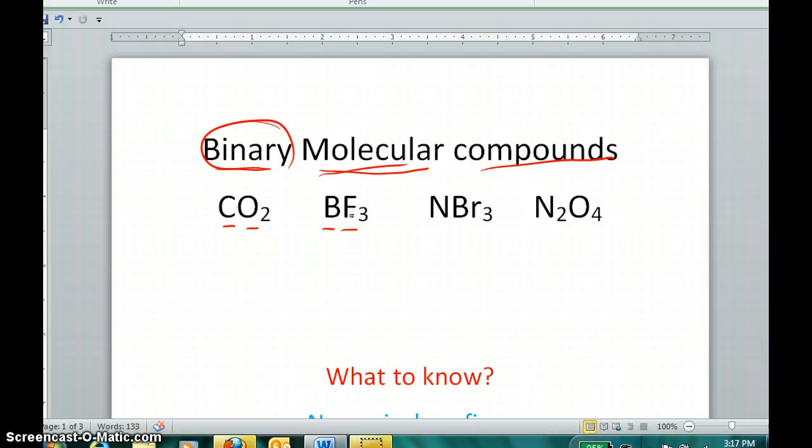Same as the case here, two elements, both nonmetals. Nitrogen and bromine, both nonmetals. Nitrogen and oxygen, both nonmetals. So these are all examples of binary molecular compounds.